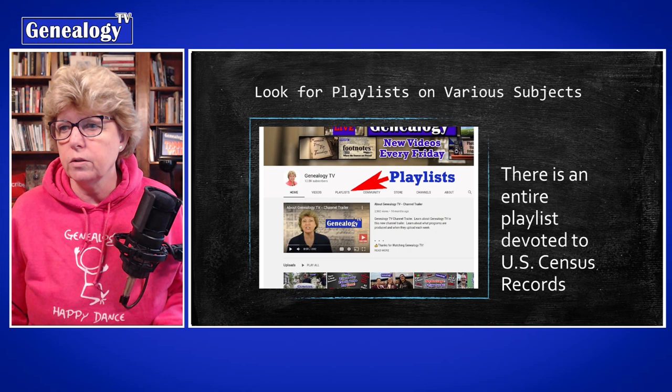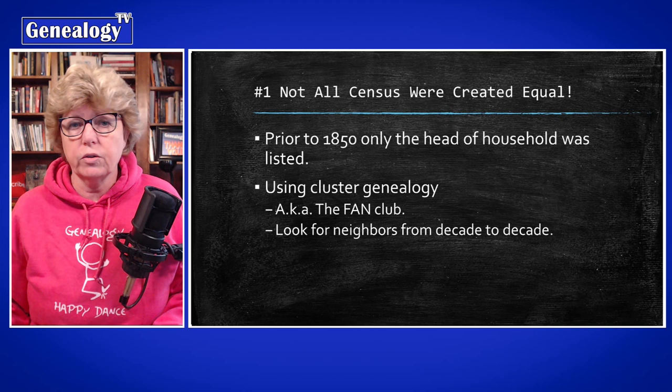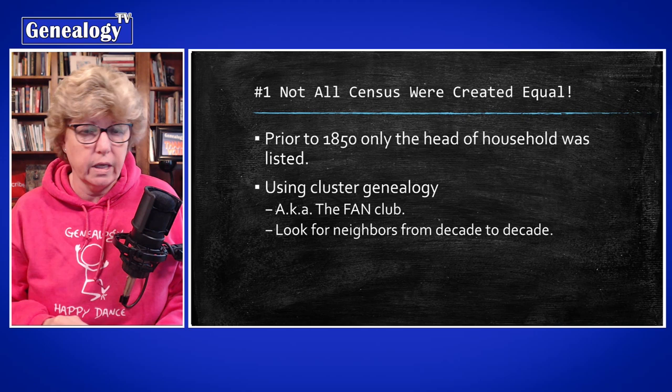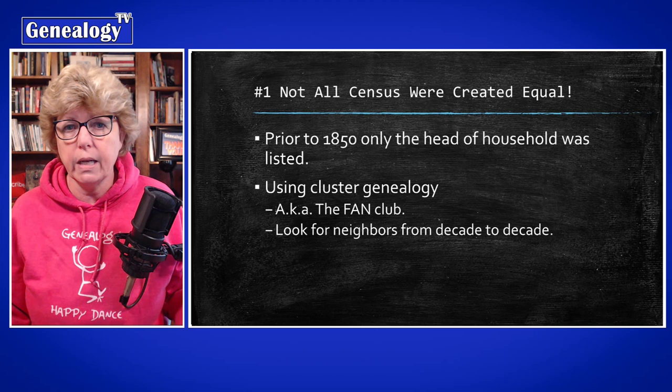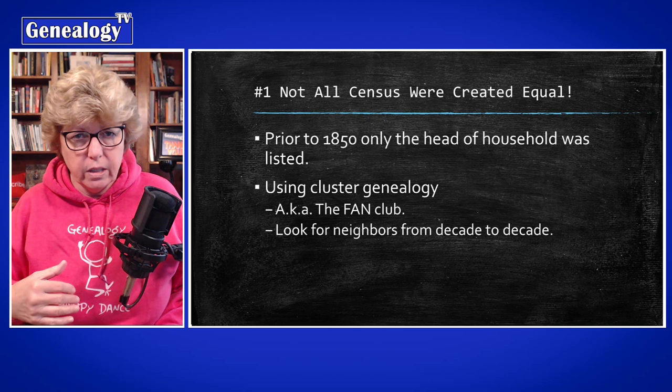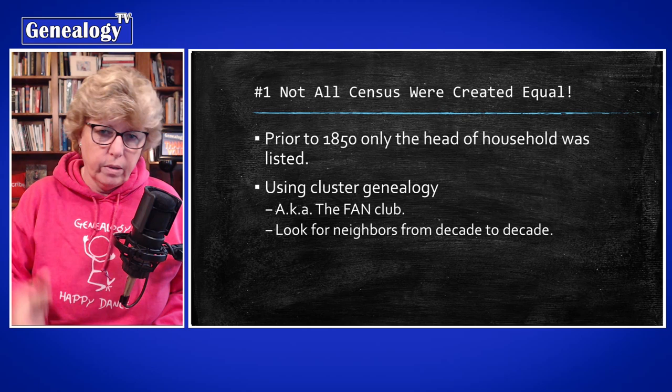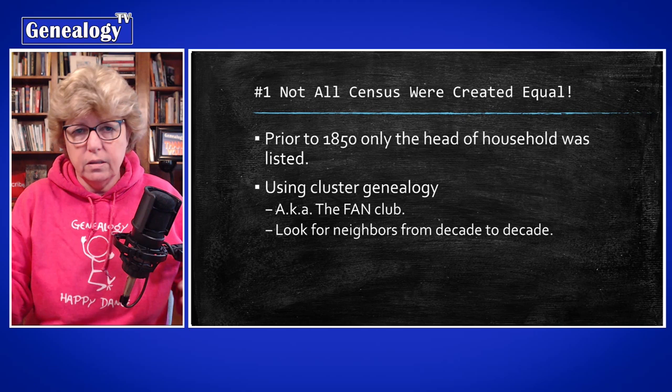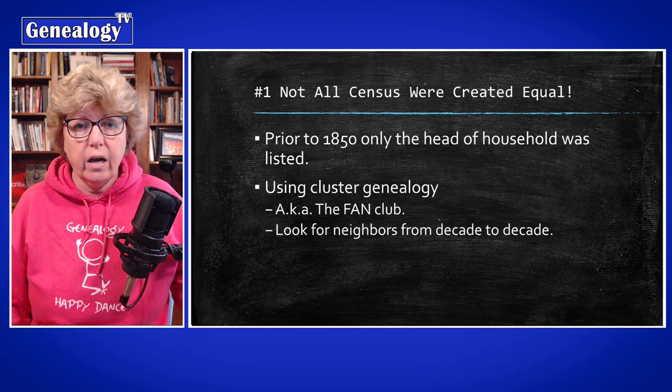Tip number one is that not all censuses are created equal. Prior to 1850, only the head of household was named. From 1850 onward, everyone in the household is named. But remember, we're working backwards — so if you're starting in 1900 and working back through 1880, 1870, 1860, 1850, you have all your family members named. But going back to 1840, only the head of household is named. How do you tie that together?